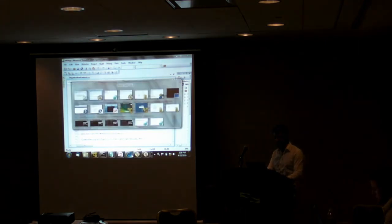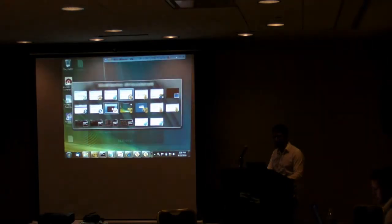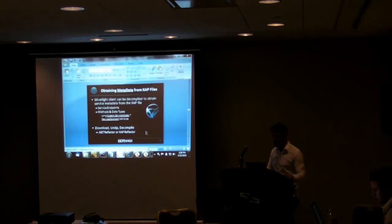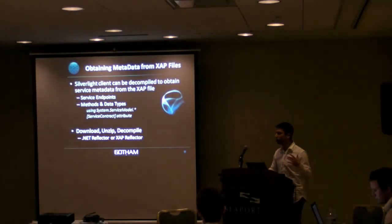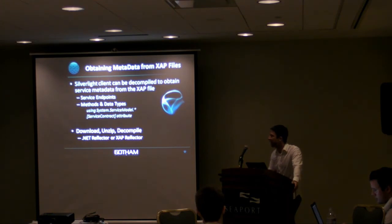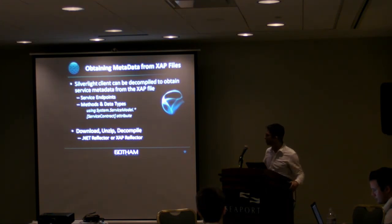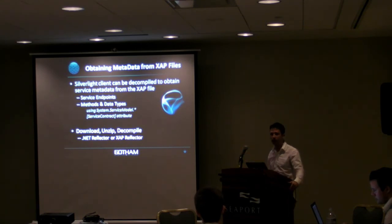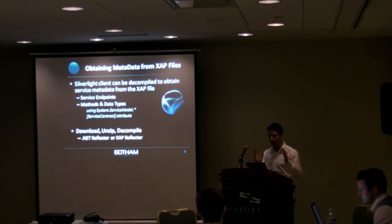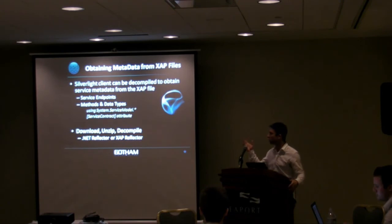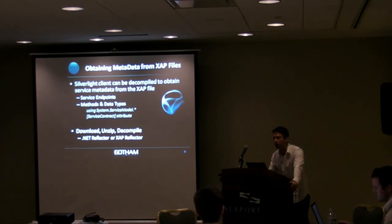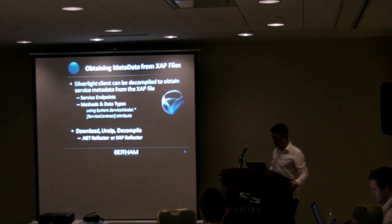The bottom line is that even though you don't have metadata exposed by default with an RIA service, you're normally going to have a XAP file, and that XAP file is going to give you all the information you need. Look for system.service model in your decompiled code, and also look for the service contract attribute, which is normally on top of your interface — that will give you a list of all the different methods you can call.